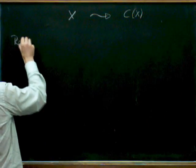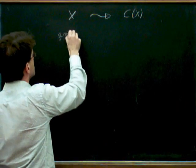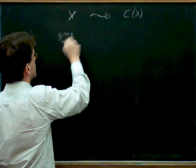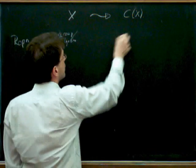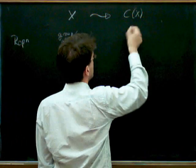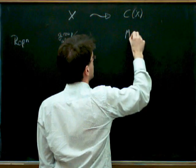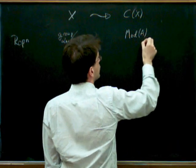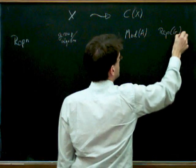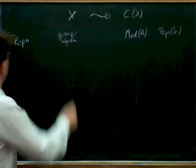Suppose you're a representation theorist, then X might be a group, or it might be an algebra or a ring or something. And what you associate to it — what category is the standard sort of thing — you associate it with a representation category or a category of modules: A-modules, or rep G, depending on how you want to write this. So that's one thing you might associate to a group.